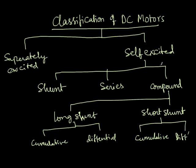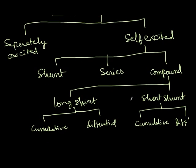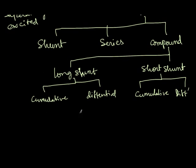When I say differential short shunt compound self-excited DC motor, you should be able to visualize the circuit. This is briefly about classification of DC motors. Our actual topic is characteristics of DC motors - how these different motors perform for different loading conditions. For our discussion, the shunt machine and the separately excited machine are essentially one and the same, so these come under one category. Then series is different, and then compound is different.